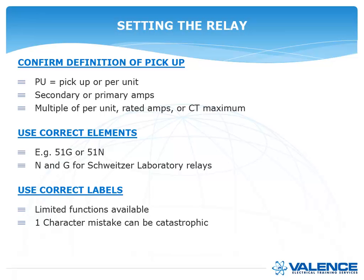When you're setting the relay, some of the important things to look at are: you want to confirm the definition of pickup. Pickup, or PU, could also mean per unit. You have to know what that is. And then you have to know whether the relay is using secondary or primary amps. You might have to look at a multiple of per unit rated amps or the CT maximum rating. It's very important to understand how this relay is going to look at that pickup setting that you put in.